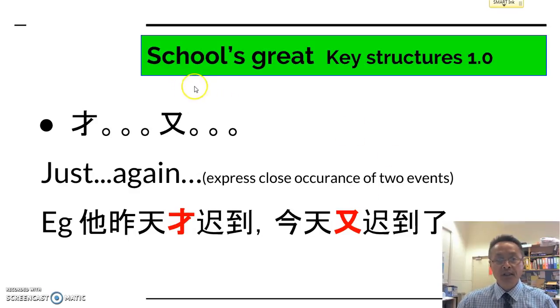Alright, our first grammar structure in school's great, key structure number one, is 才 and 又. Now we've had these before in separate situations. 才 in most cases would mean just.